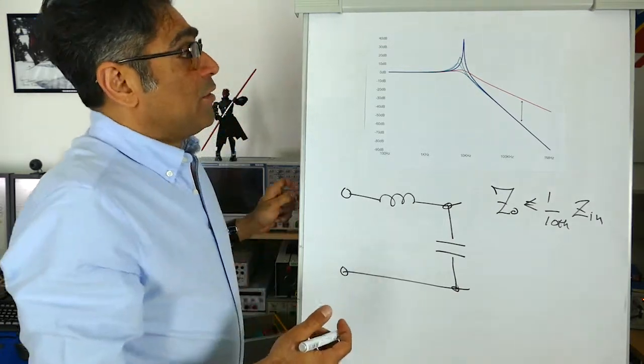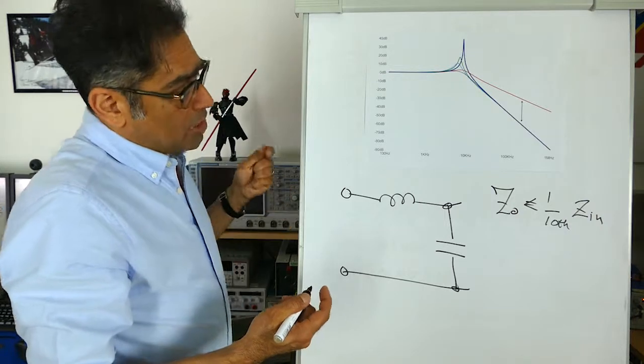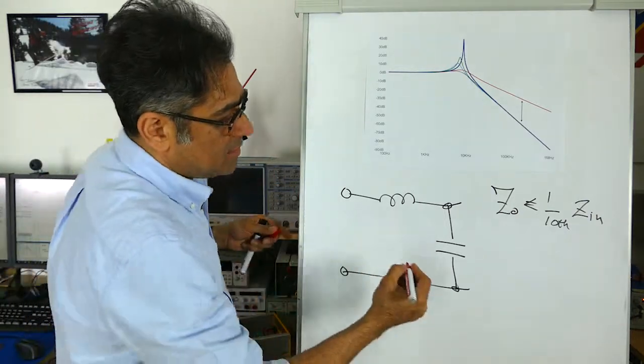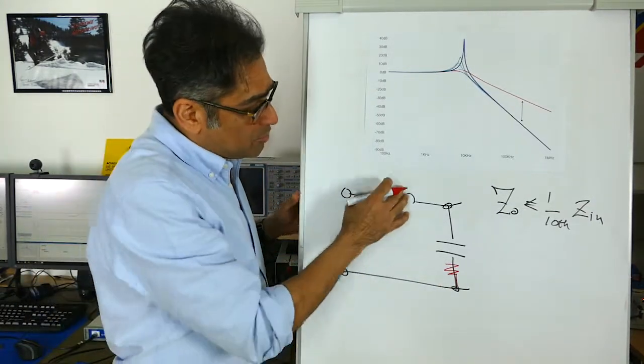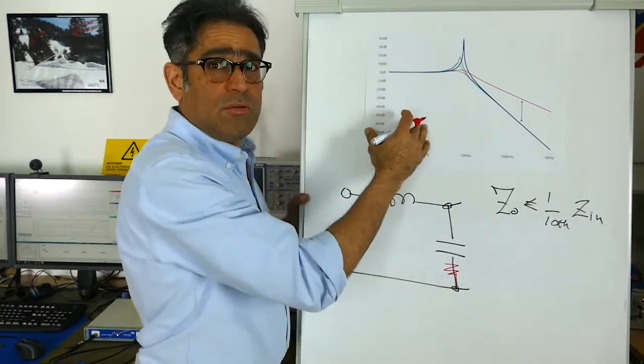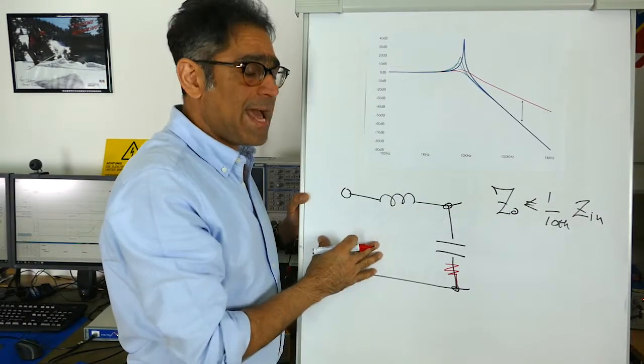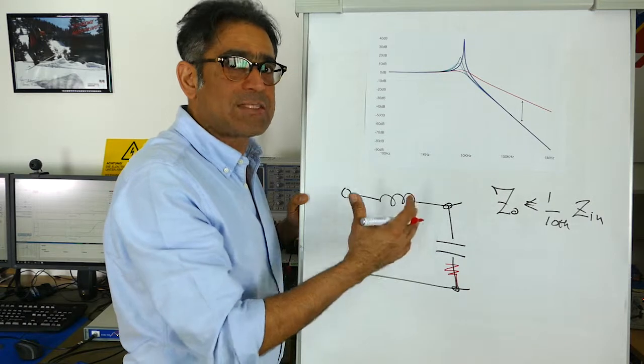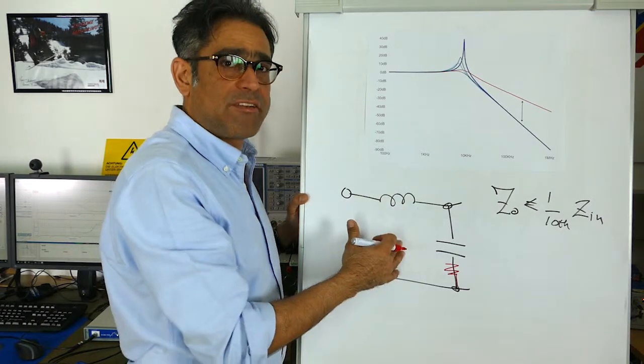Now the first thing that you may think is that okay what I can do is I can add an extra damping resistor here and that will take away the high Q and will result in everything being damped. Unfortunately this actually breaks the attenuation as well as the cutoff frequency of our filter.